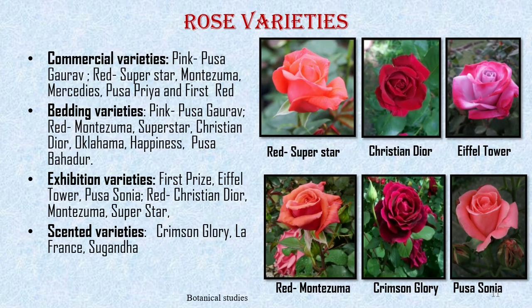Rose varieties cultivated for various purposes: commercial varieties include Pink Pusa Gaurav, Red Superstar, Monte Zuma, Mercedes, Pusa Priya, and First Red. Bedding varieties include Pink Pusa Gaurav, Red Monte Zuma, Super Star, Christian Dior, Oklahoma, Happiness, and Pusa Bahadur. Exhibition varieties include First Prize, Eiffel Tower, Pusa Sonia, Red Crimson Dior, Monte Zuma, and Super Star. Scented varieties include Crimson Glory, La France, and Suganda.